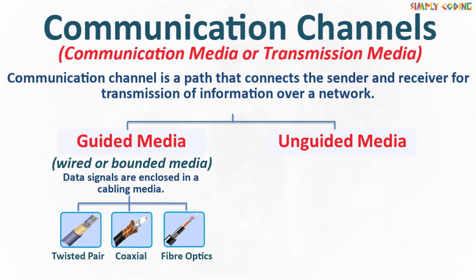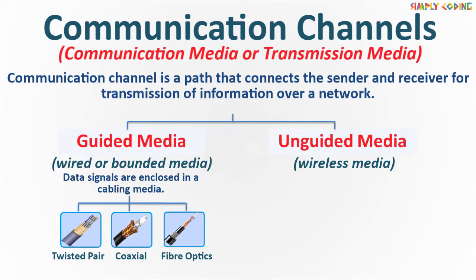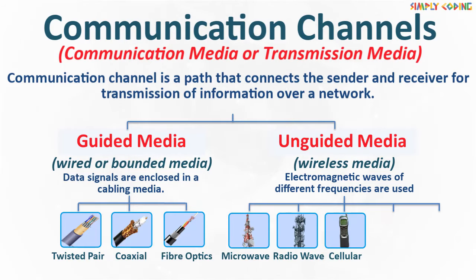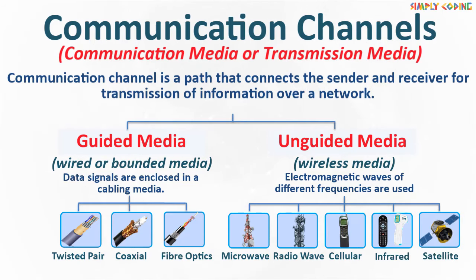Unguided media is also known as wireless media. It can also be used in places where it is impossible to install cables. Here, electromagnetic waves of different frequencies are used. Some examples of unguided media are microwave, broadcast radio, cellular radio, infrared, and communication satellites.